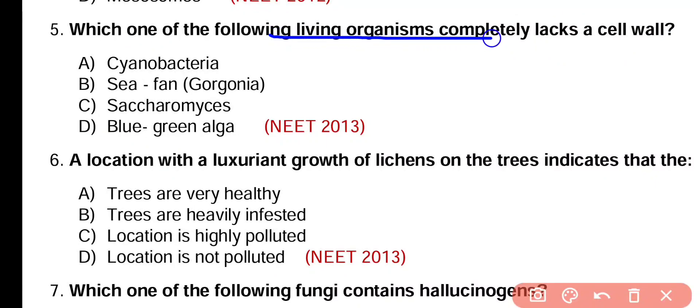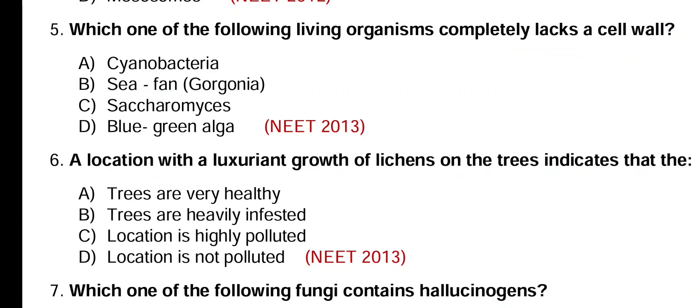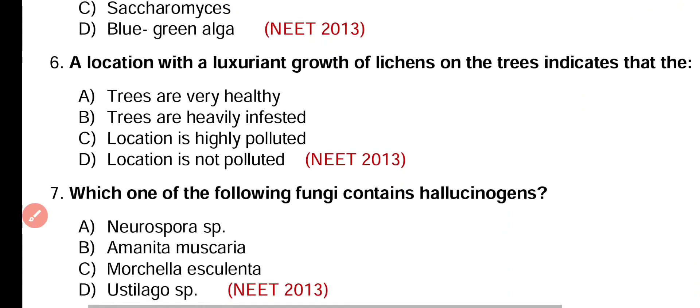Question number 5. Which of the following living organism completely lacks a cell wall? Cyanobacteria, Cephan, Saccharomyces, or blue-green algae. Correct answer is option B. Cephan or Gorgonia is a soft coral animal, and animals have no cell wall at all.